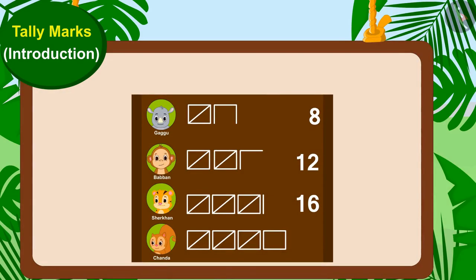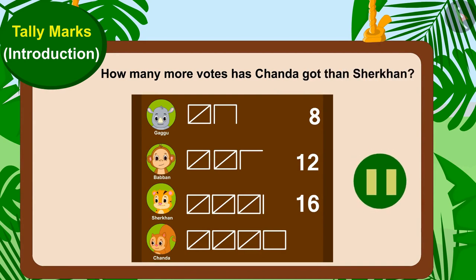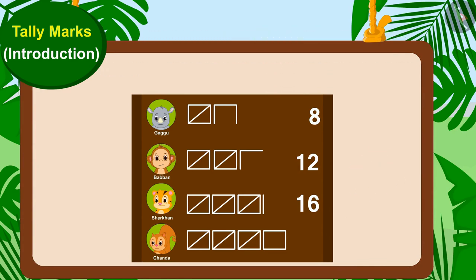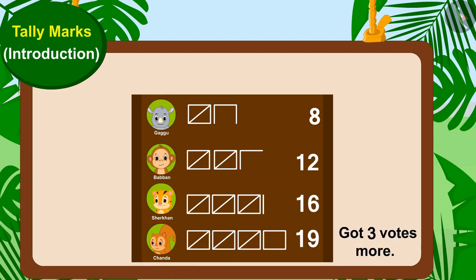Now, can you tell how many more votes has Chanda got than Shere Khan? If you wish to, you may stop the video and find the answer. Yes, Chanda has received 19 votes and Shere Khan has got 16 votes. This means Chanda got three more votes than Shere Khan.